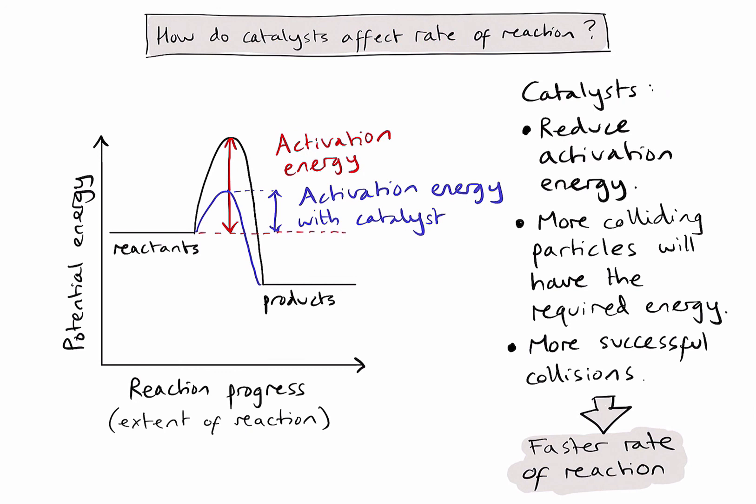As a quick summary of the key points: a catalyst reduces the activation energy required in a given reaction, as shown on the diagram on the left. If the activation energy has been reduced, more particles that are colliding will have the required energy for a successful collision. Therefore, the impact will be to speed up the rate of reaction.